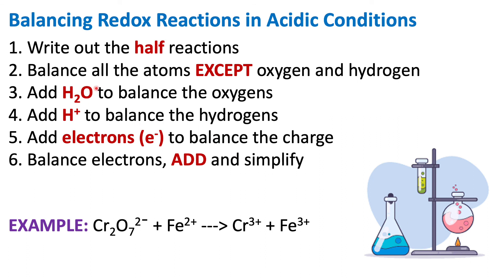To quickly summarize what we did: first, write out your half reactions — you can figure them out using LEO says GRR to determine what's being oxidized and what's being reduced, and most of the time you'll see it intuitively. Then balance all the atoms except for oxygen and hydrogen. Then add in your waters to balance oxygen. Add in your H+ to balance your hydrogens. Balance your charge by adding electrons — remember, you add electrons to the more positive side. Then balance those electrons so both half reactions have the same number. Finally, add and simplify your half reactions together to get your overall balanced redox reaction in acidic conditions.